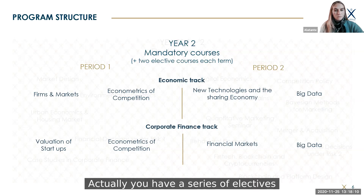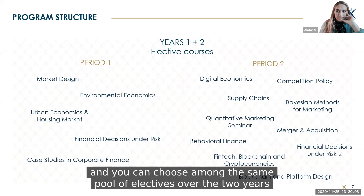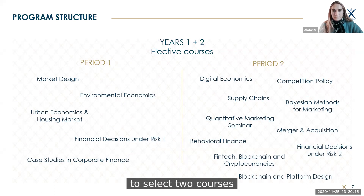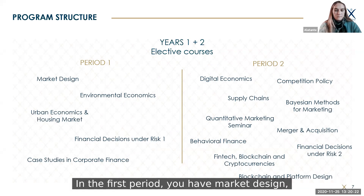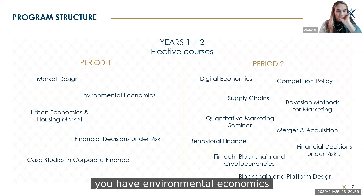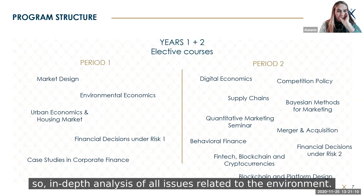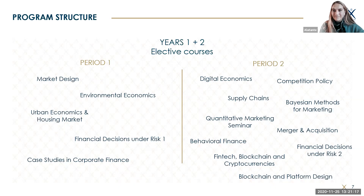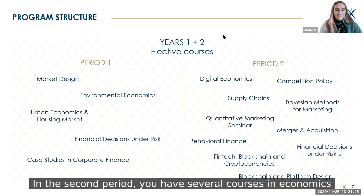You also have a series of electives — one to choose each term in each year. You can choose from the same pool of electives over the two years, giving you the opportunity to select two courses if you're interested. In the first period, electives include market design, environmental economics, urban economics and the housing market, financial decisions under risk, and case studies in corporate finance.